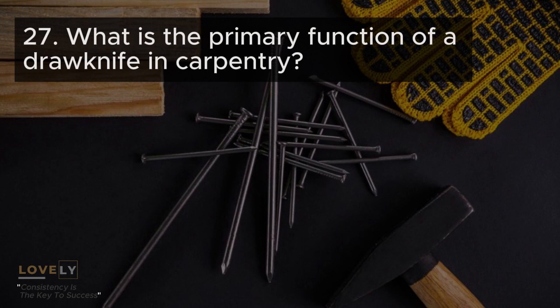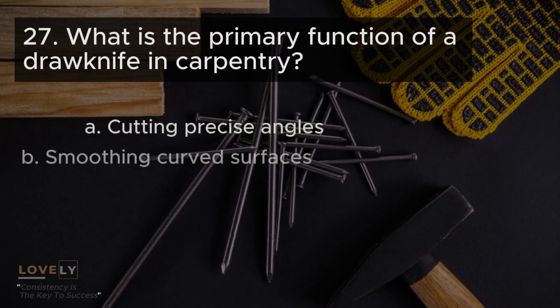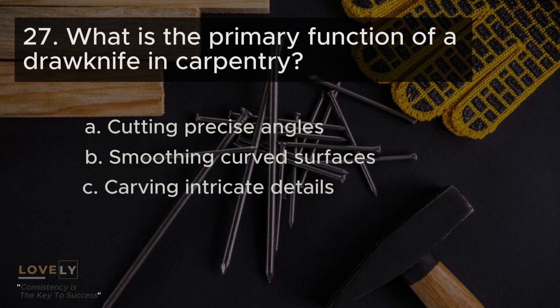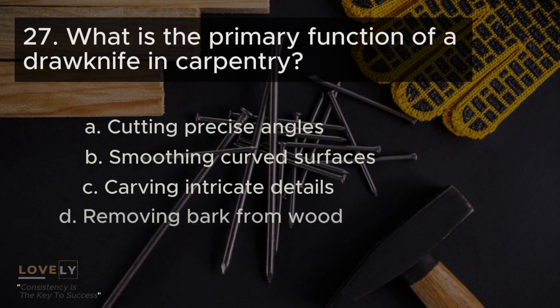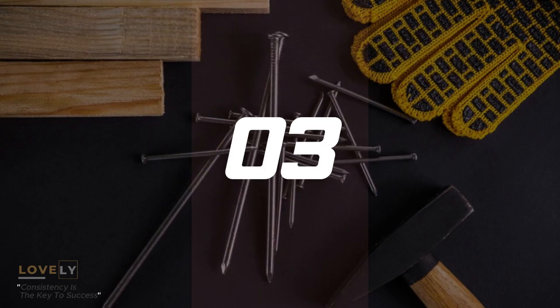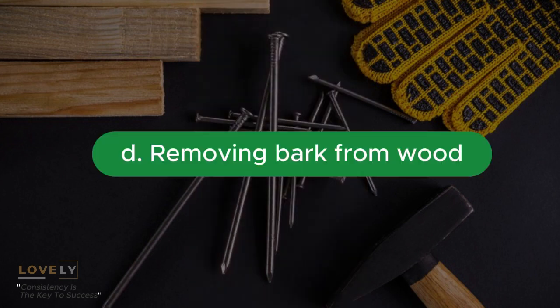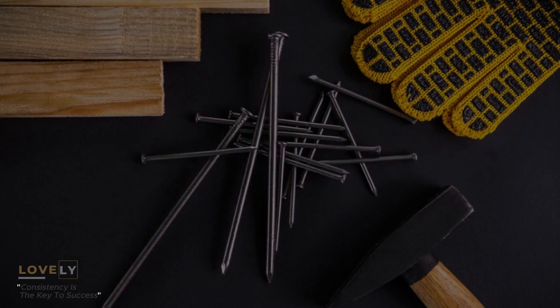Question 27: What is the primary function of a draw knife in carpentry? A. Cutting precise angles B. Smoothing curved surfaces C. Carving intricate details D. Removing bark from wood. Answer D. Removing bark from wood.